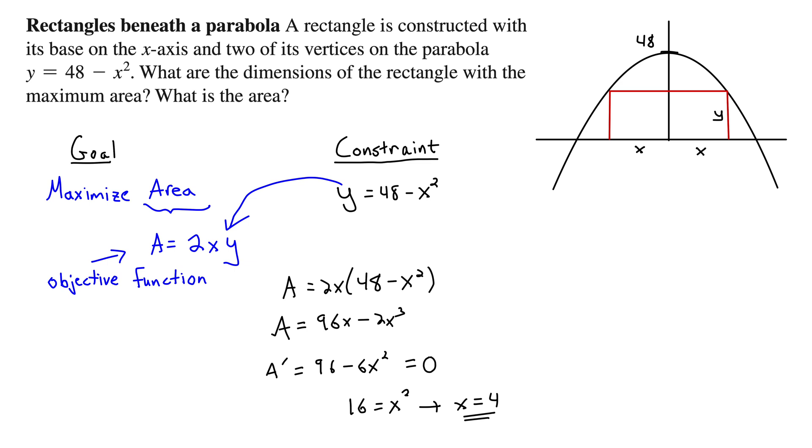I'll give a more mathematical reasoning in a minute. Let's answer the question. It says, what are the dimensions of the rectangle with maximum area? We have 4 here which means that this entire distance across is going to be 8 because it's twice that amount. So the dimensions of the maximum rectangle that can be fit under this parabola are 8 by what? What is the height? So remember that x is 4 not 8 so plugging in 4 we have y equals 48 minus 16 which is 32.